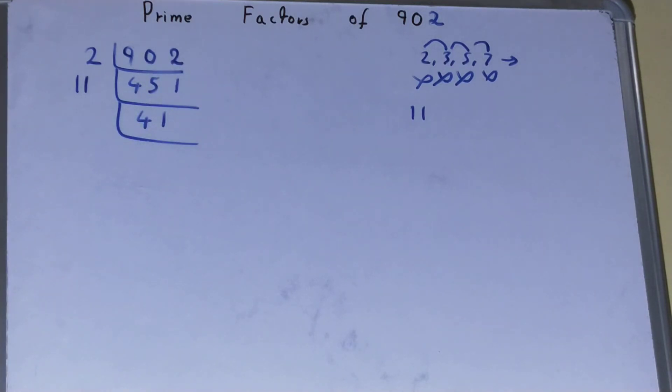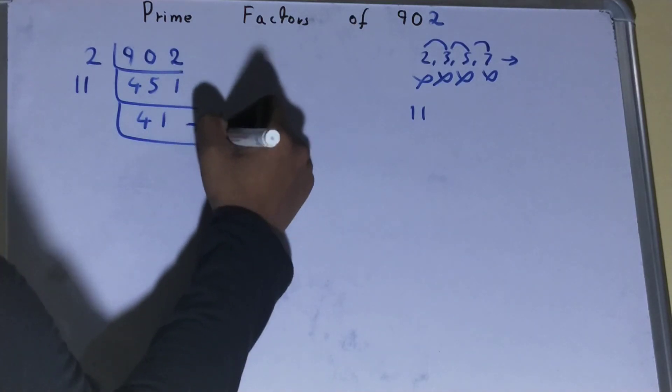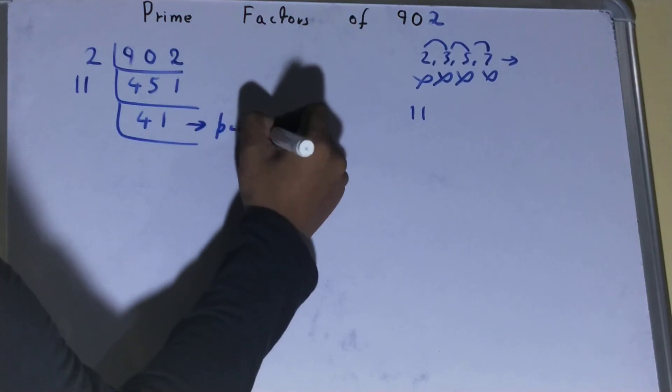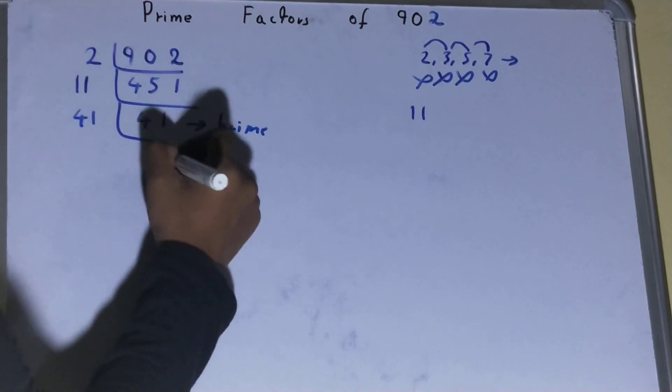Now this 41 is further not divisible with 11, and 41 is also a prime number. So 41 is only divisible by itself, and when you do so you will be getting 1.